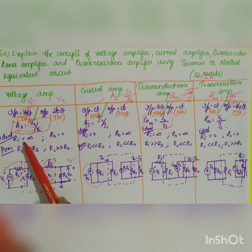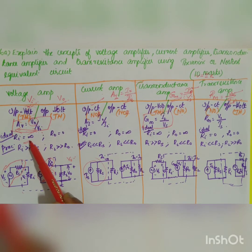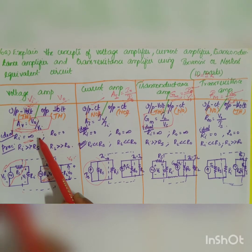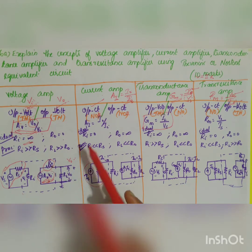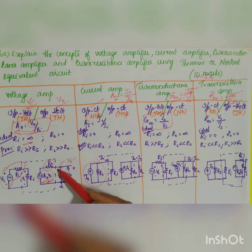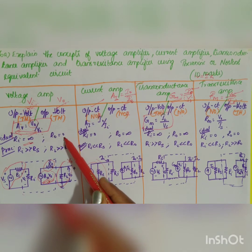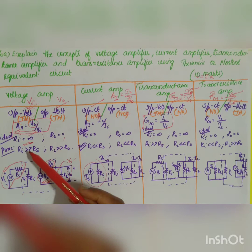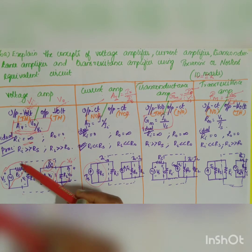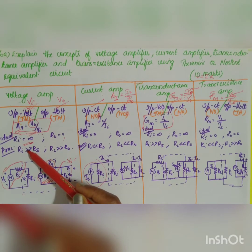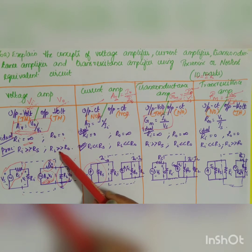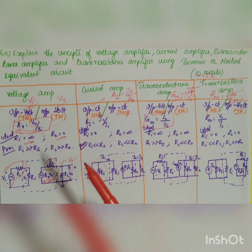For the ideal voltage amplifier, the input resistance Ri should be very high (ideally infinite) and the output resistance Ro should be equal to zero, so that the entire amplified voltage appears across the load resistor RL. In the practical case, Ri should be much greater than Rs, and Ro should be much less than RL.